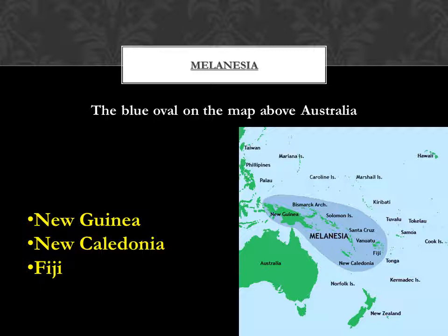The fourth and final section we're going to talk about is Melanesia. It's the blue oval on the map right above Australia — that's the easiest way to describe where it is. For this, we're going to talk about New Guinea, New Caledonia, and Fiji, and they're actually going to be on this PowerPoint in just a minute.